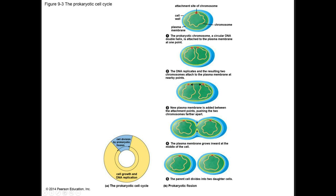Prokaryotic fission occurs in five stages. At the start of the growth phase, the single prokaryotic chromosome is usually attached at one point to the plasma membrane of the cell. During the growth phase, the circular DNA chromosome replicates, producing two identical chromosomes that become attached to the plasma membrane at nearby but separate sites. As the cell increases in size, new plasma membrane is added between the attachment points, pushing the duplicated chromosomes apart. The plasma membrane grows inward between the two chromosome copies. Fusion of membranes along the cell equator completes the separation, producing two daughter cells, each containing one chromosome. The daughter cells are genetically identical clones of the parent cell.